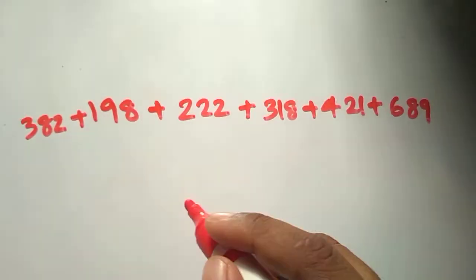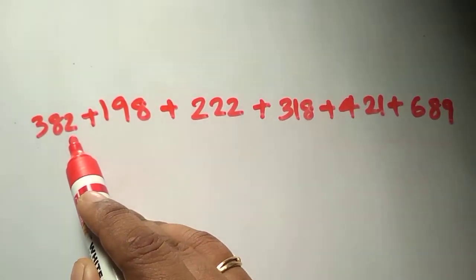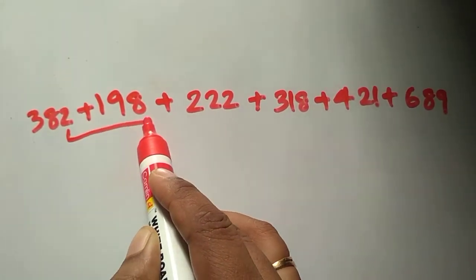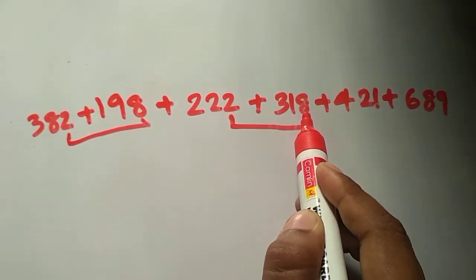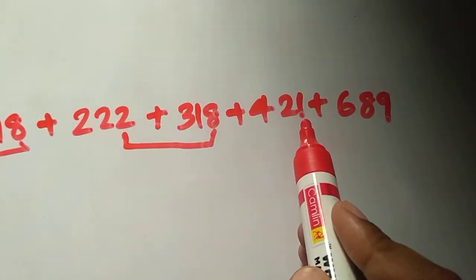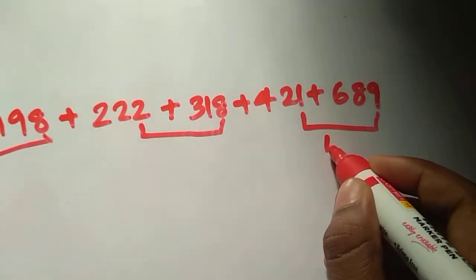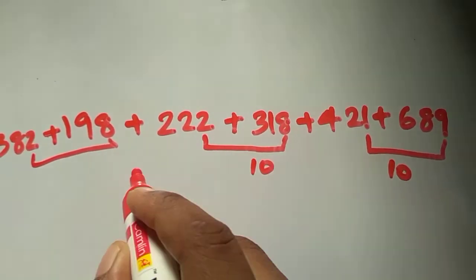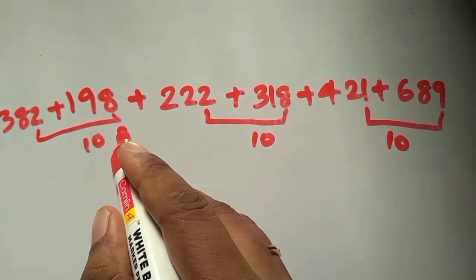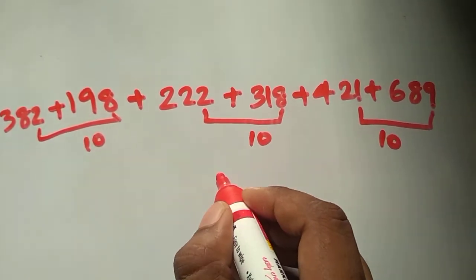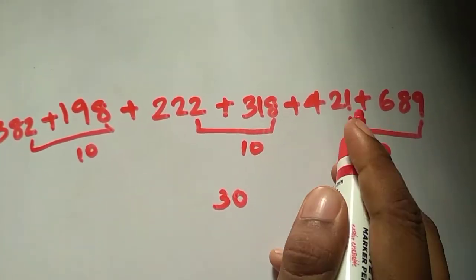We check for complements. The 10's complement of 2 is 8 — and 8 is here. Also another 2 and 8 pair. Then 1 and 9 are complements. So we get three 10's from the 1's place, giving a sum of 30.